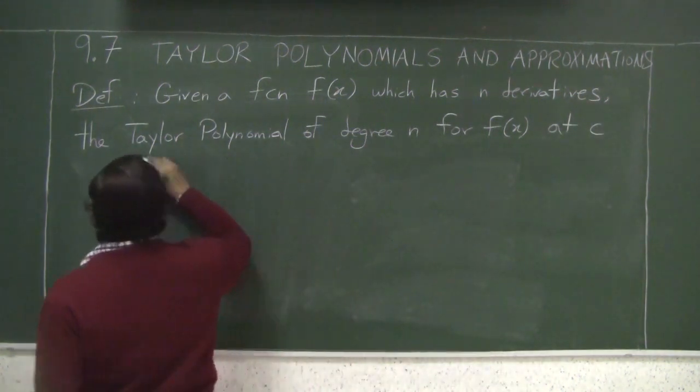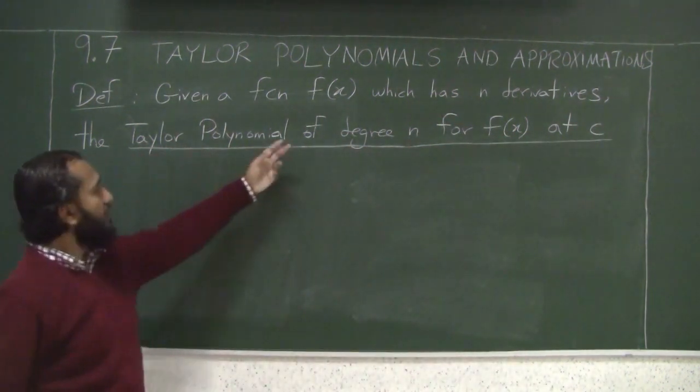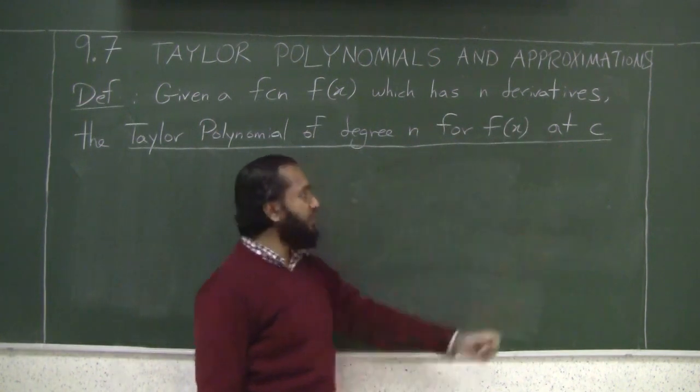So this is our terminology. The Taylor polynomial - we specify the degree, we specify the function, we specify the point where we are doing the approximation.